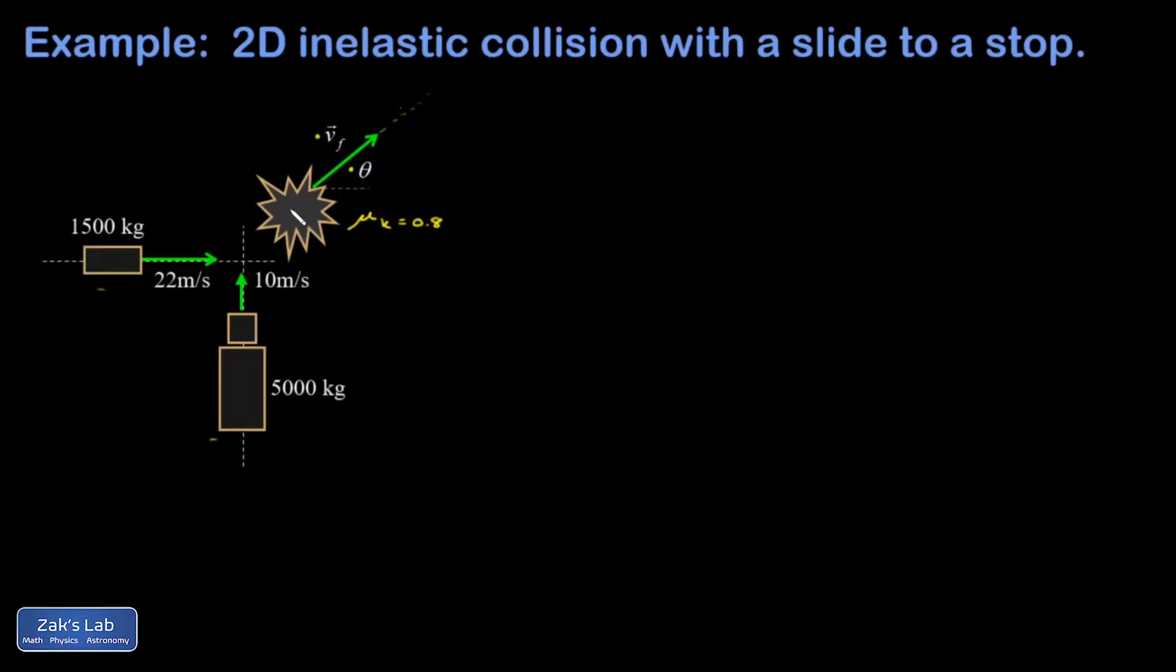In addition, I want to find out how far the wreckage is going to slide before it comes to a stop. I put a coefficient of kinetic friction of 0.8 here, which roughly corresponds to tires on wet concrete. To simplify things, the car is moving perfectly horizontally and the truck is moving perfectly vertically as they approach this intersection and collide.